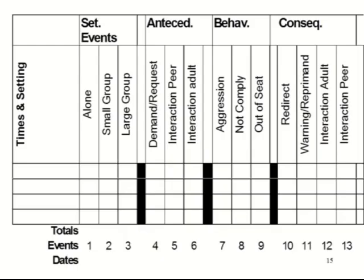Here's an example of the top of a FADO sheet with information filled in. We've added a section with three possible setting events: is the student alone, in a small group, or in a large group? We have antecedents including demand or request, interactions with peers, and interactions with adults — things we weren't able to narrow down from the hypothesis alone. The behaviors of concern are aggression, noncompliance — defined as doing something other than following a direction when given — and being out of seat. Consequences include redirection, a warning or reprimand, interaction with an adult, and interaction with a peer.